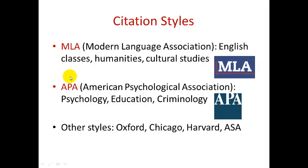APA stands for American Psychological Association. Papers written in the discipline of psychology tend to be written in APA format, but the APA format is also used for disciplines such as education, criminology, and a number of other social sciences. Many hard sciences also use the APA format. So generally, if it's an art or culture topic, you are writing in MLA style, and if it's a scientific paper, either in the hard sciences or the soft sciences, chances are you're going to be using APA.